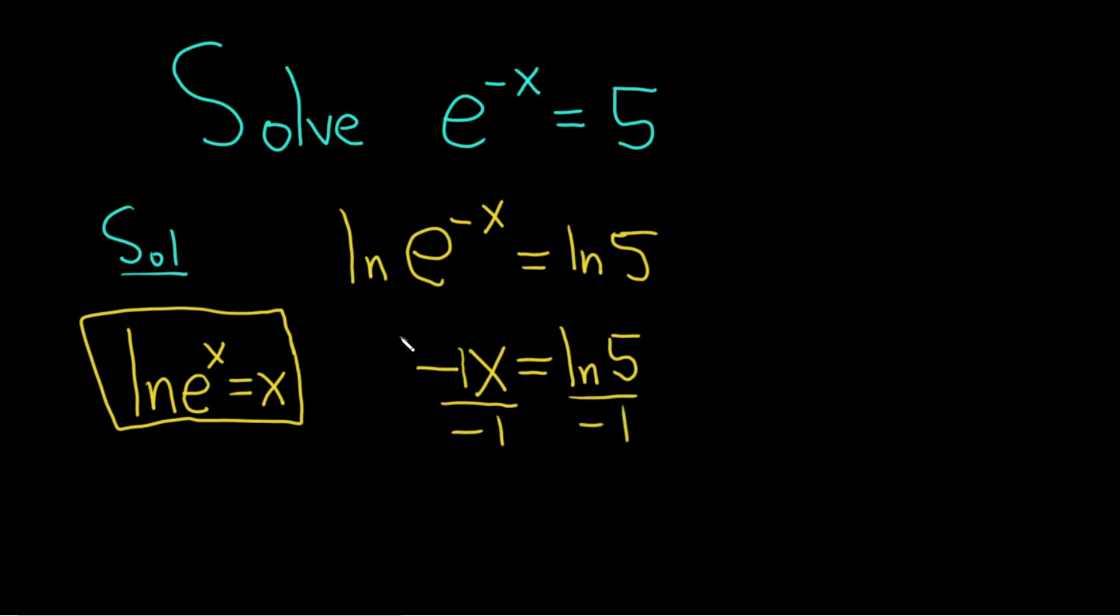These go away, so we're left with x equals the natural log of 5 over negative 1. We can write that as negative natural log of 5. And so the answer is x equals negative natural log of 5.